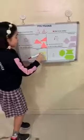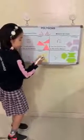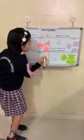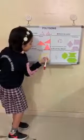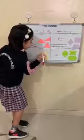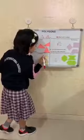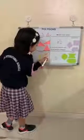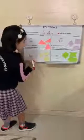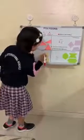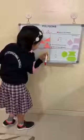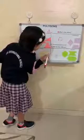Now we will start with pentagons. This shape is a pentagon. Let's count the sides: one, two, three, four, five. So here we have five sides. Let's count the vertices: one, two, three, four, five — five vertices. Let's count the angles: one, two, three, four, five — five angles.